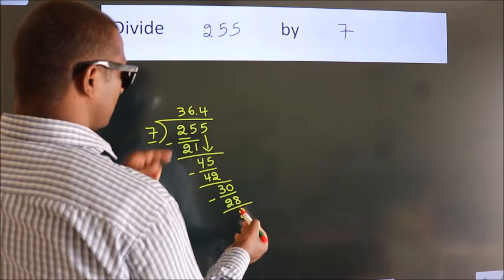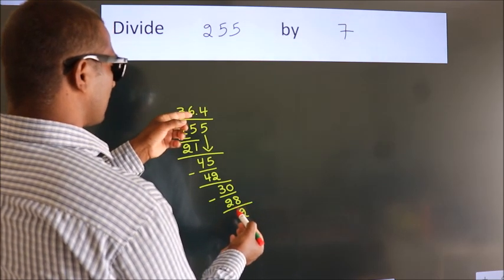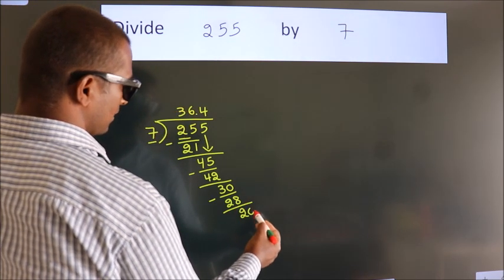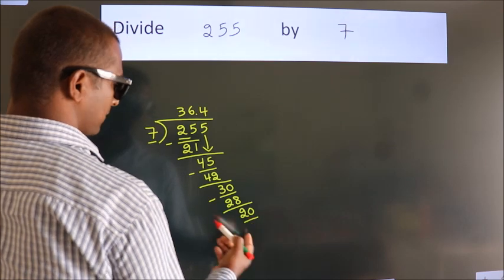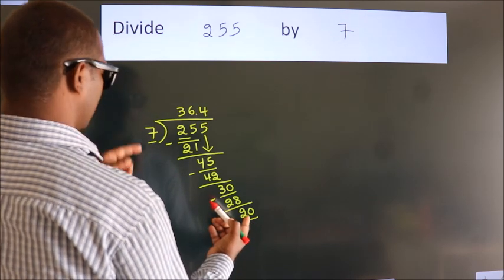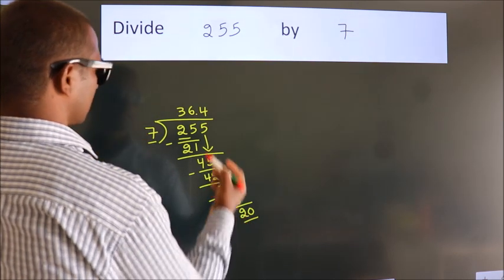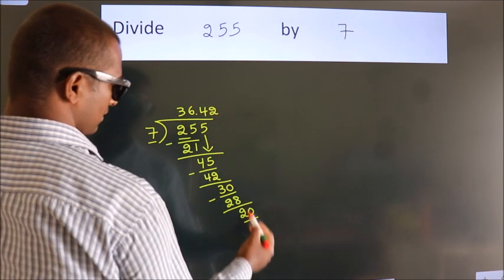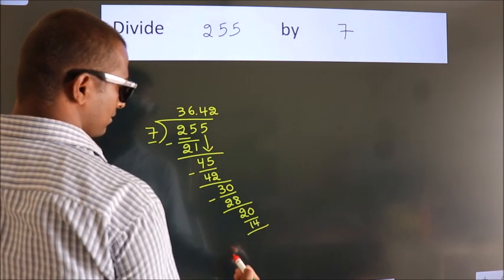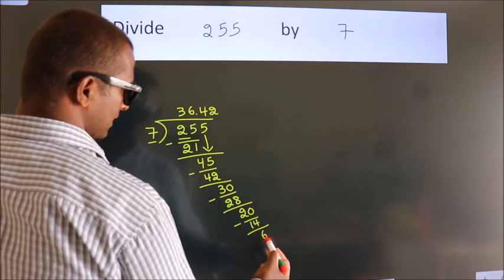After this, we already have the decimal. So directly take 0. So 20. A number close to 20 in 7 table is 7×2 is 14. Now we subtract. We get 6.